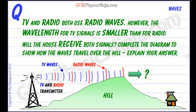TV and radio transmissions both use radio waves. However, for TV signals the radio waves are much shorter wavelengths, and that means they can carry more information. So how do these waves move when they go past an object such as a hill?